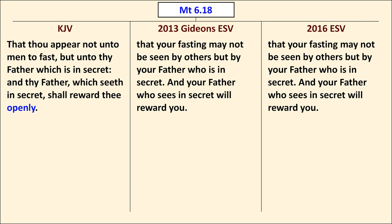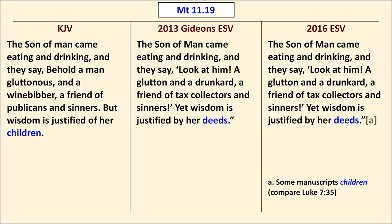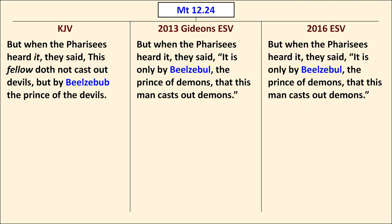In Matthew 6:18, the Textus Receptus ends the verse with the word "openly" — "Thy father shall reward thee openly" — but "openly" is absent in the Gideon's ESV, which follows the 2016 ESV. In Matthew 9:13, "I am come not to call the righteous but sinners to repentance" — the TR includes "to repentance," but the Gideon's ESV does not, agreeing with the 2016 ESV. In Matthew 11:19, "wisdom is justified of her children" is the TR reading, but the Gideon's ESV and the 2016 ESV have "wisdom is justified by her deeds." In Matthew 12:24, the Gideon's ESV and 2016 ESV agree that it should be "Beelzebul," not "Beelzebub" as the TR reads.